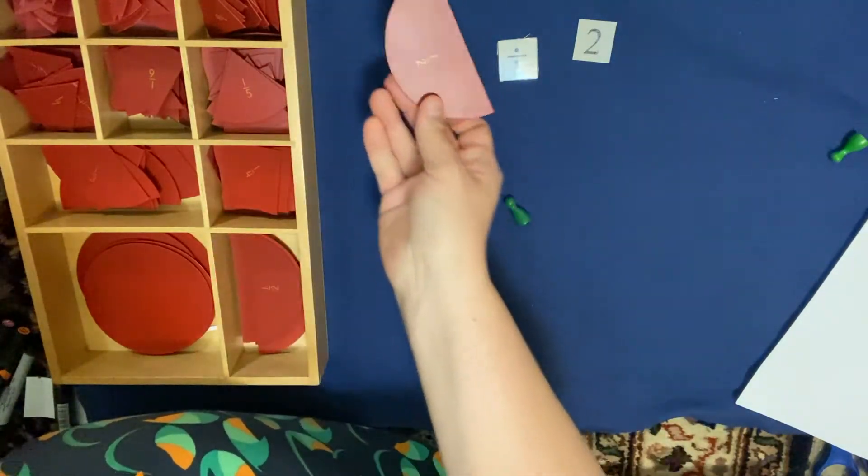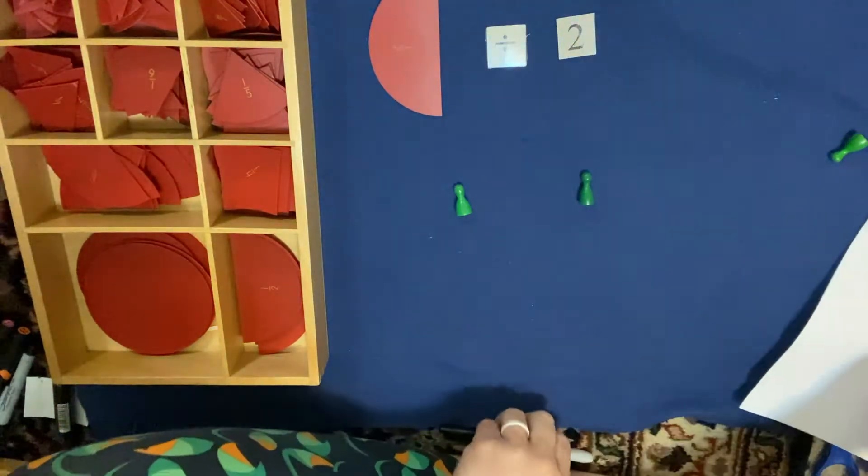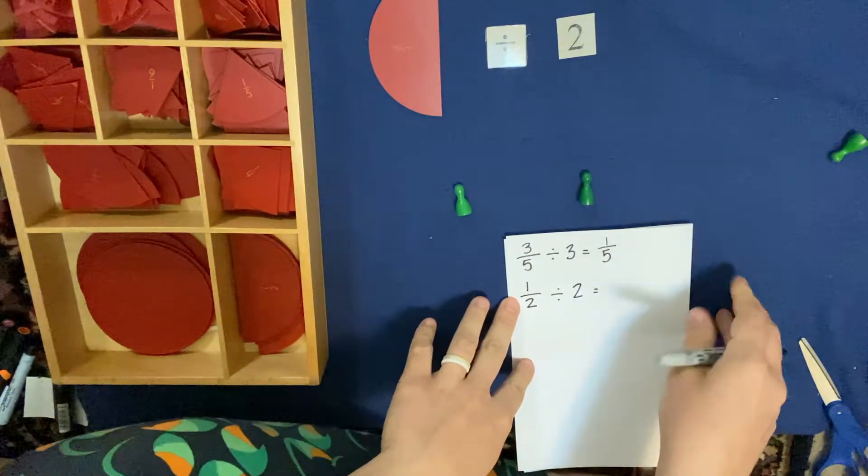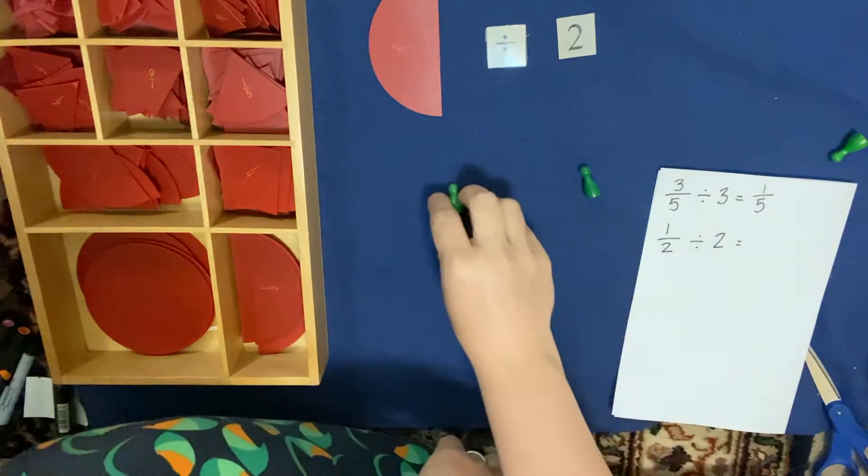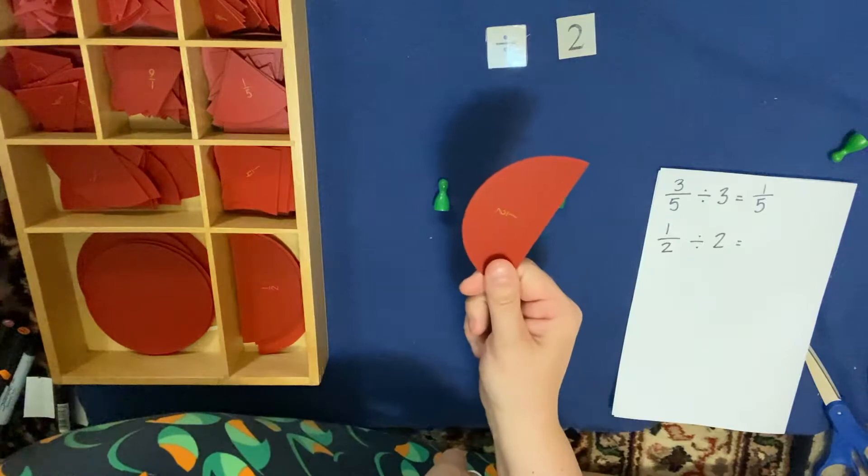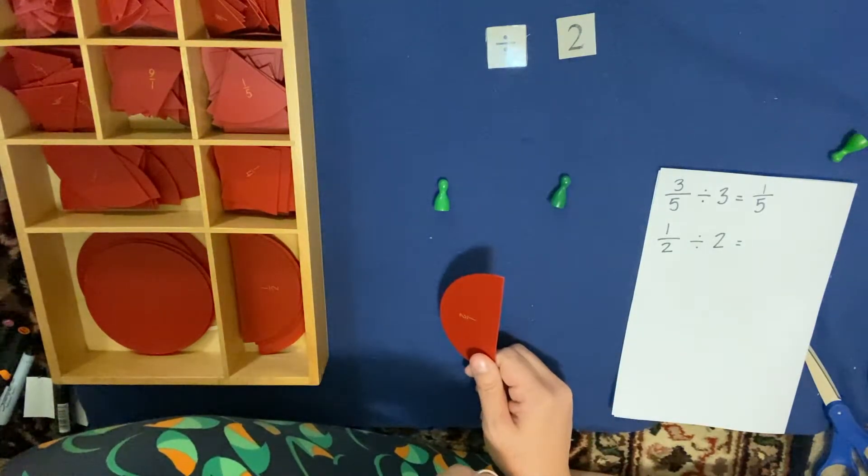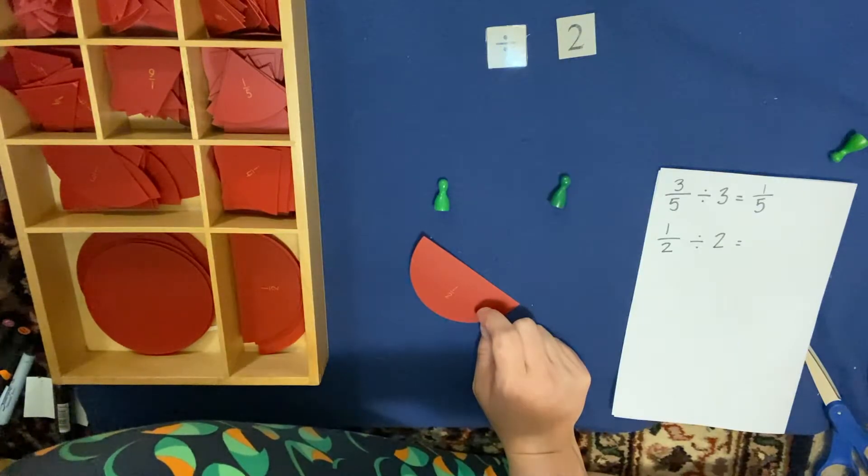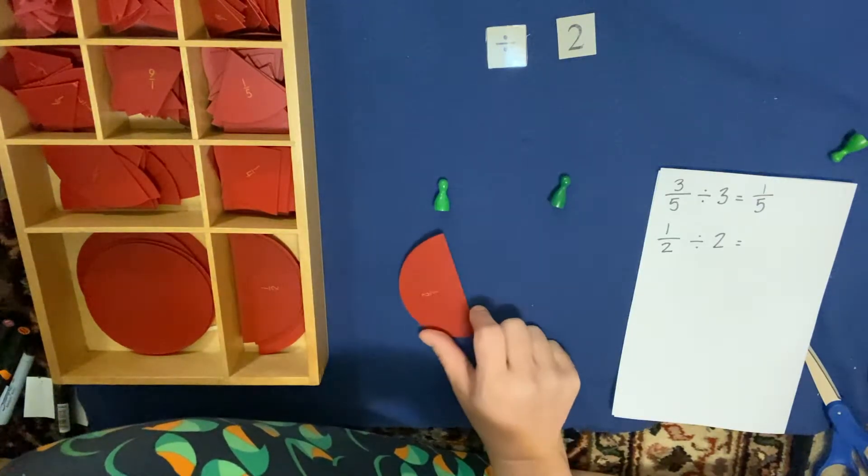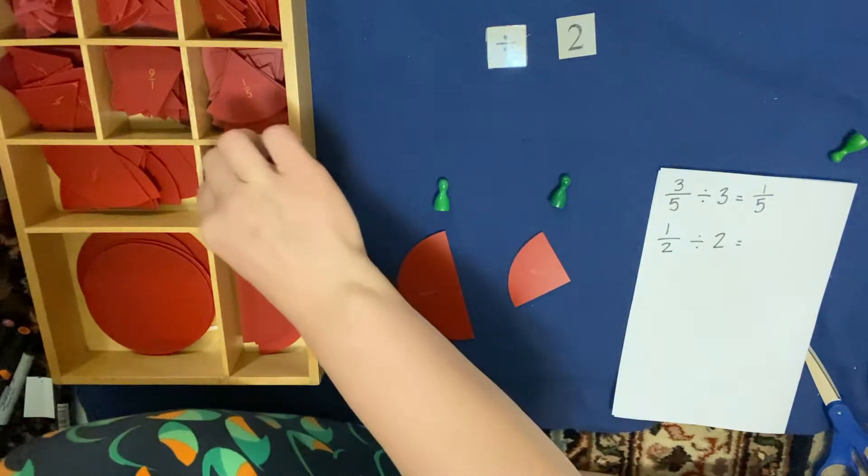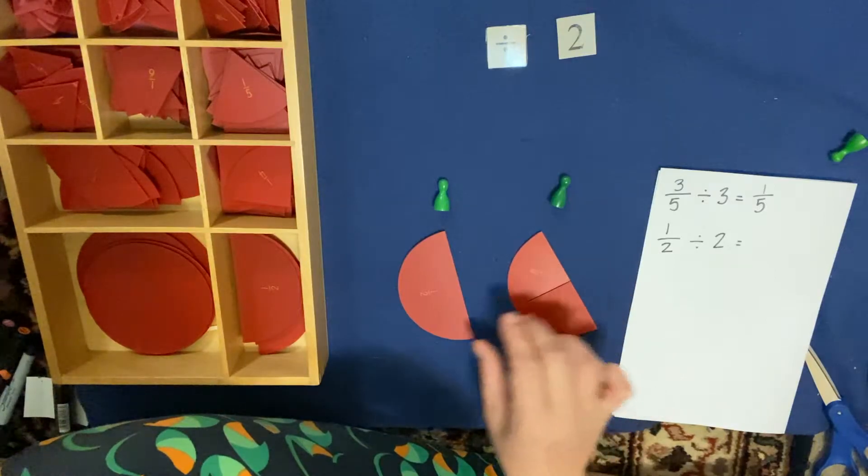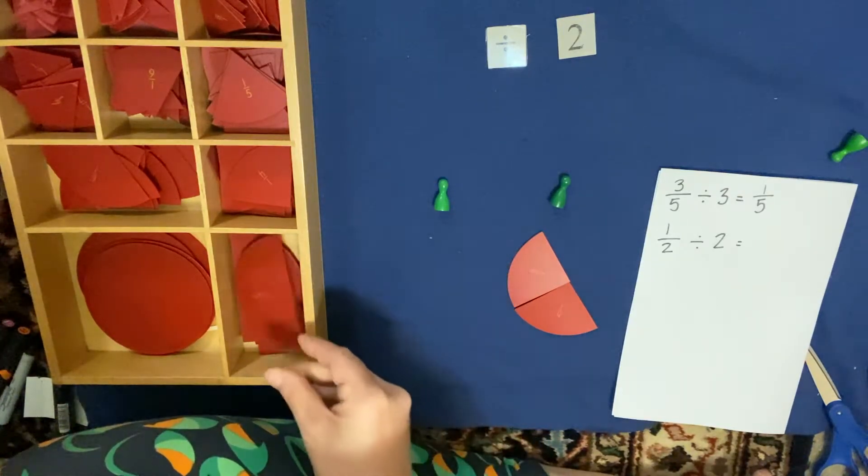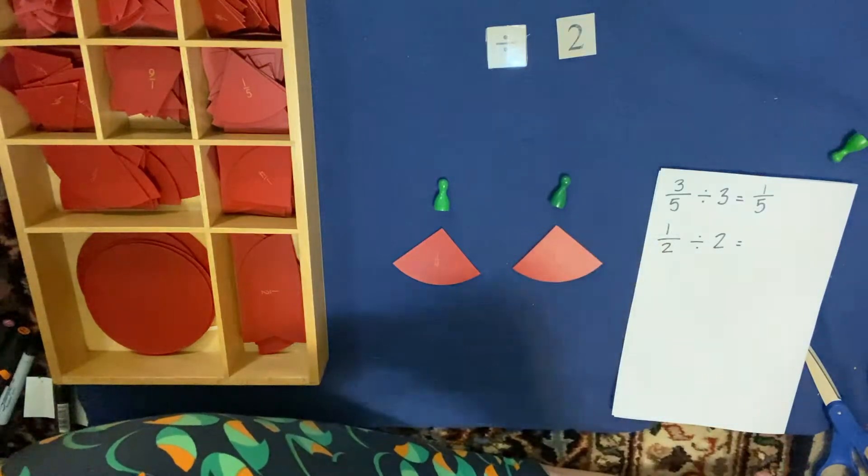Let's take a look at another one. And I want to do 1/2 divided by 2. So let's write that down. 1/2 divided by 2. So what this problem is saying is we need to take this 1/2, and we need to share it between these two Skittles. Now is there something that is equivalent to 1/2 that would equal 2 pieces? Let's see. Ah, 2/4 is equivalent to 1/2. So we could exchange this 1/2 for these 2/4, and then we can share them out equally.